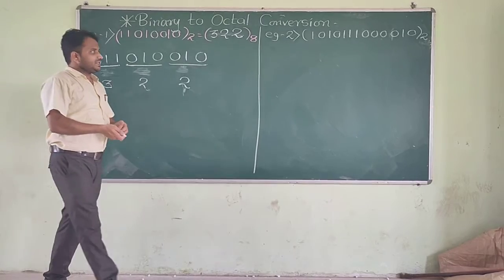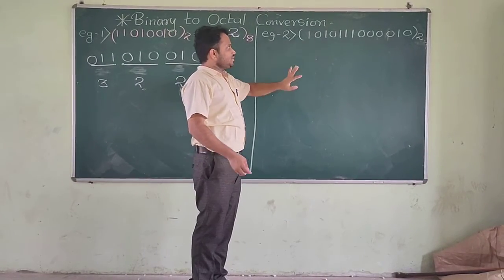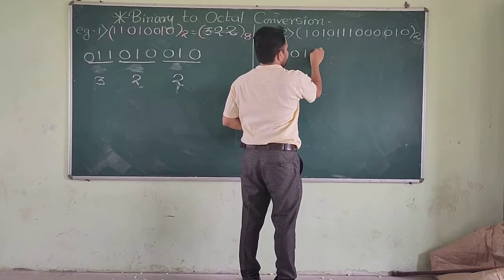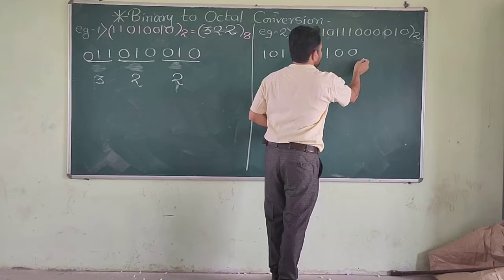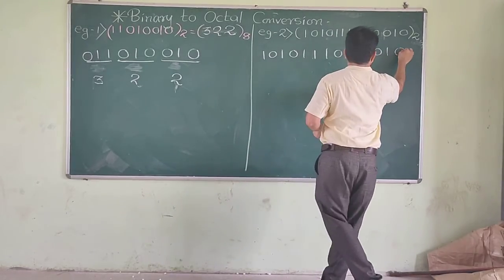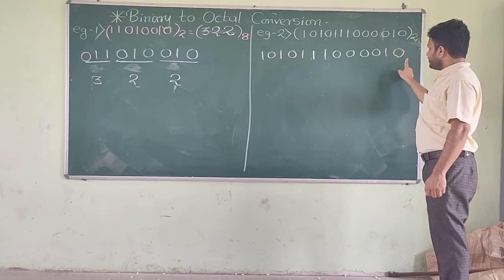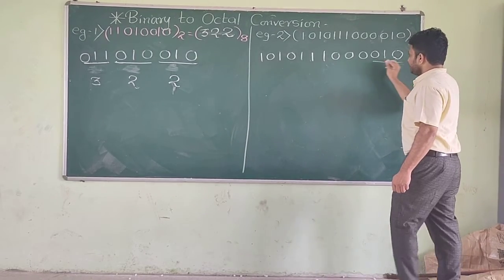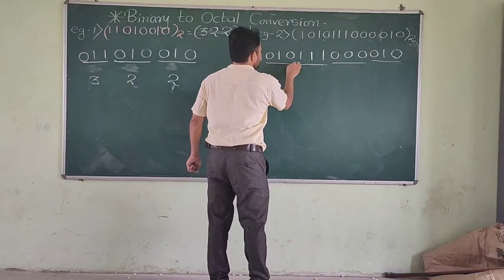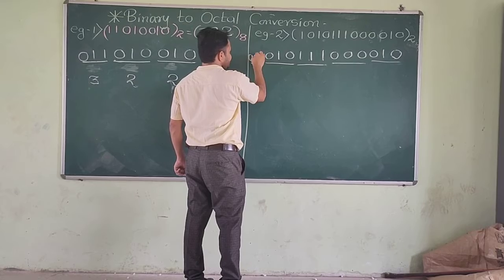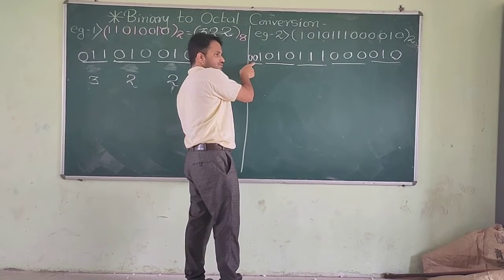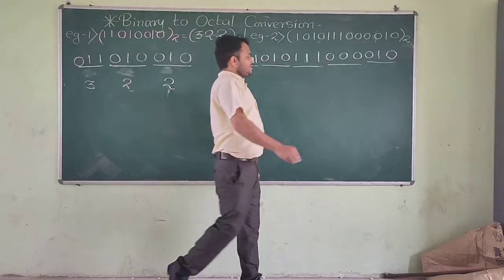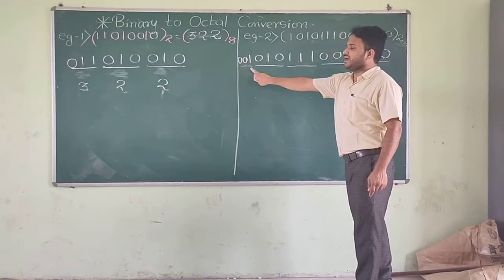Now just take another example. You have to follow the same procedure. First, write down the given number: 1, 0, 1, 0, 1, 1, 0, 0, 0, 0, 1, 0. This is the number given. You have to make a group of 3 bits from right towards left. So I will make groups of 3, 3, 3. Now this leftmost group has only 1 bit, so don't forget to add 2 zeros at this position. This gives group number 1, group number 2, group number 3, group number 4, and group number 5.